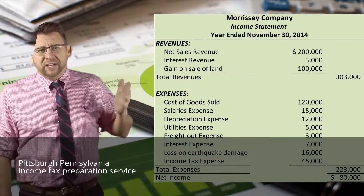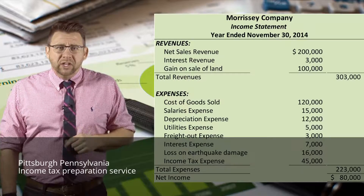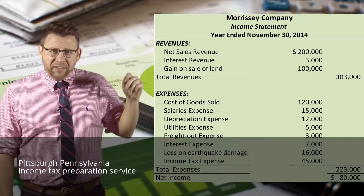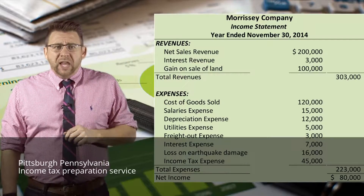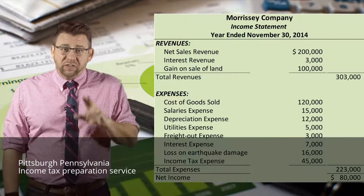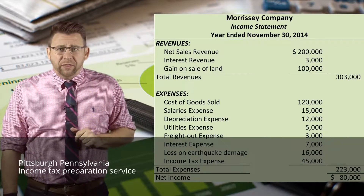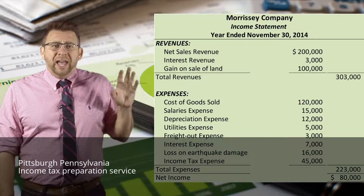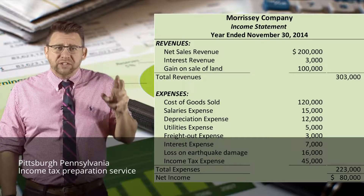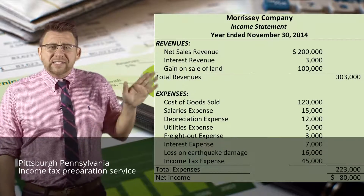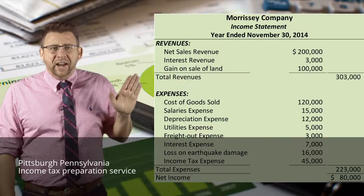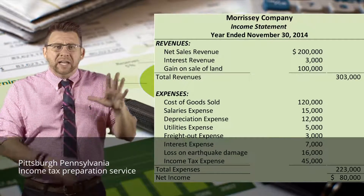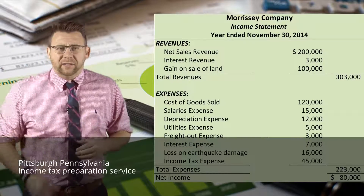Here is an example of a single-step income statement. You can see that revenues and gains, which we will learn about later, are all listed together — same with expenses. One area some students struggle with: when we report financial statements, if we have a list of common accounts like revenues and expenses, we list them all in one column and carry the total out to the far column. That does not mean the columns represent debit and credit when presenting financial statements.